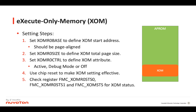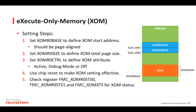Next, I will introduce the steps to set Execute-Only Memory. First, set the start address of Execute-Only Memory in APROM. Second, set the total page size of Execute-Only Memory. Third, set the attribute of Execute-Only Memory as active, debug mode, or off. After finishing the setting, you have to use the chip reset to make the above setting effective. Last, check these three registers to confirm the status of Execute-Only Memory.